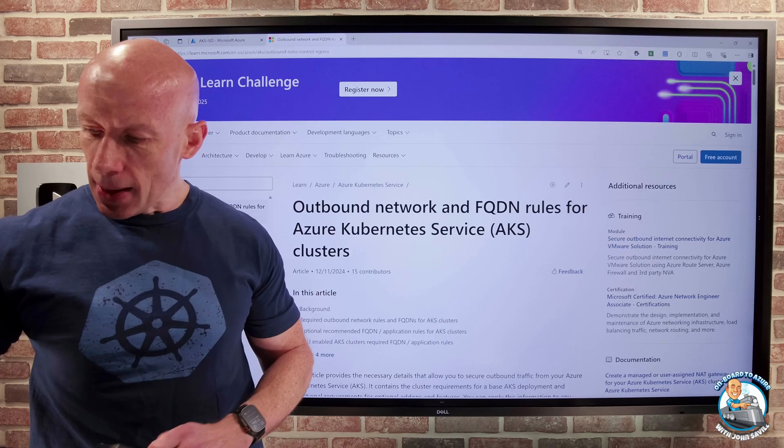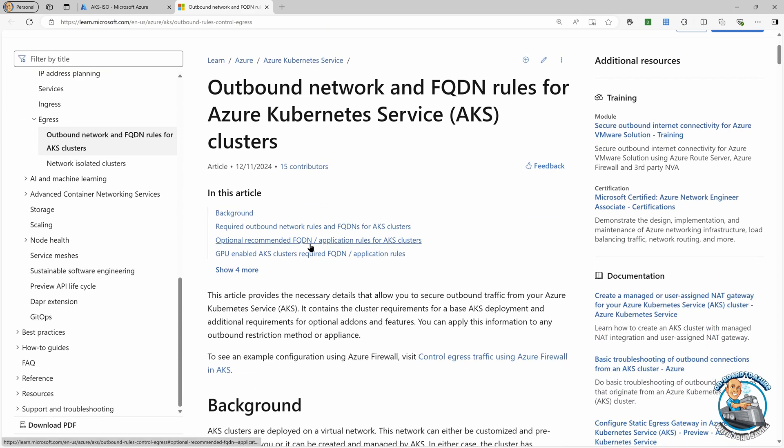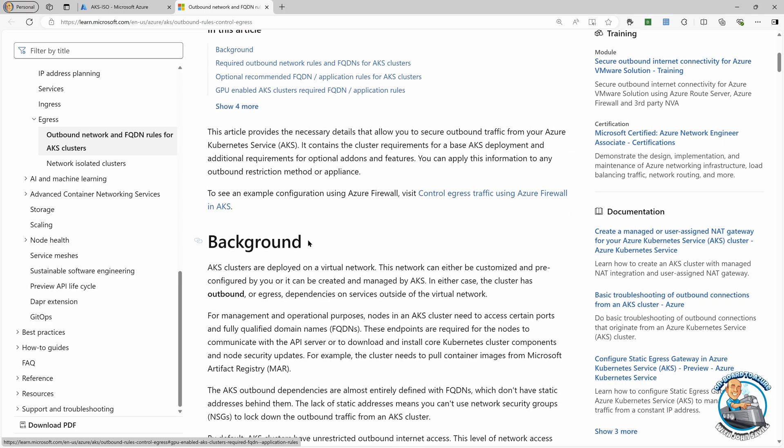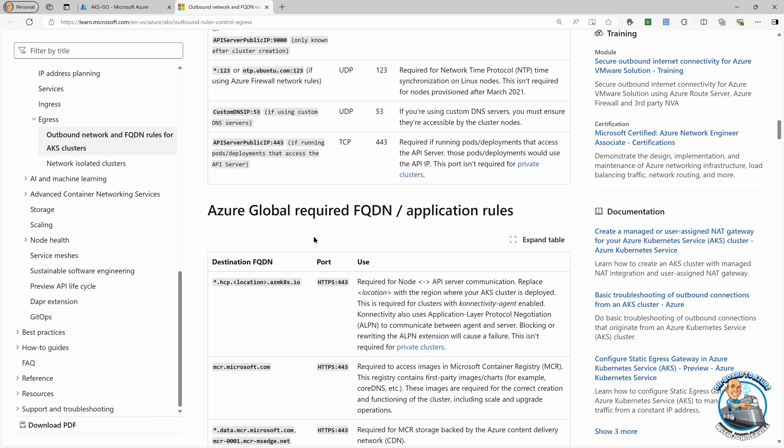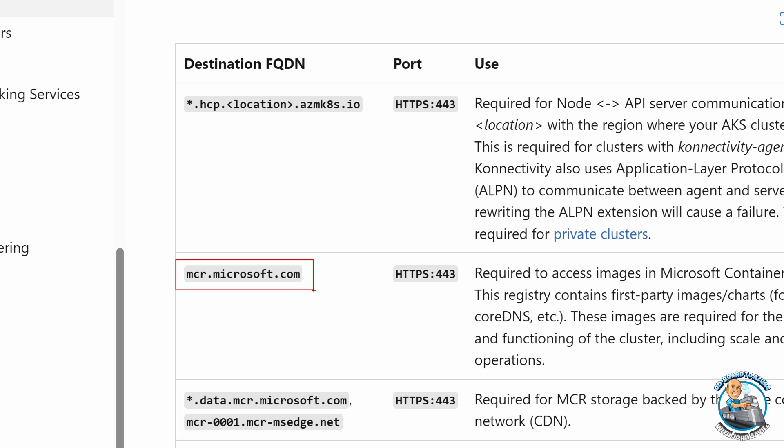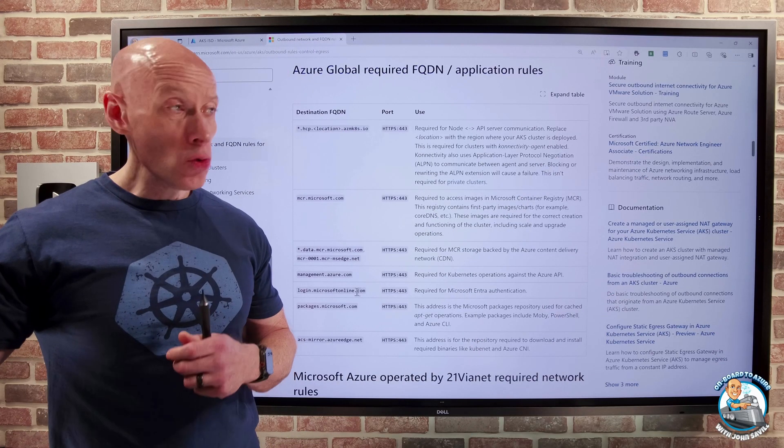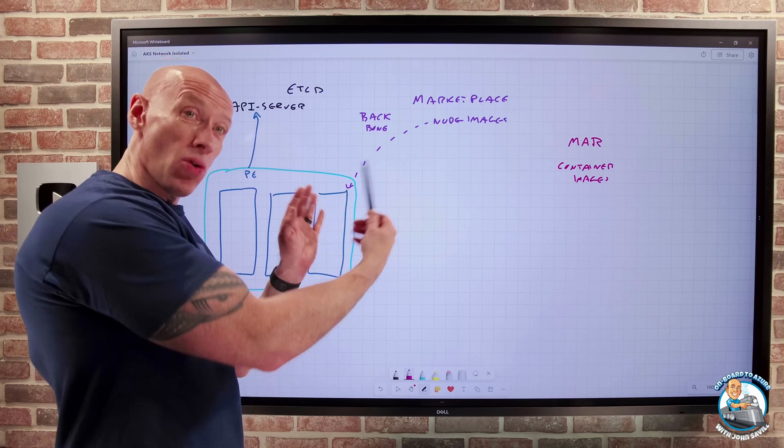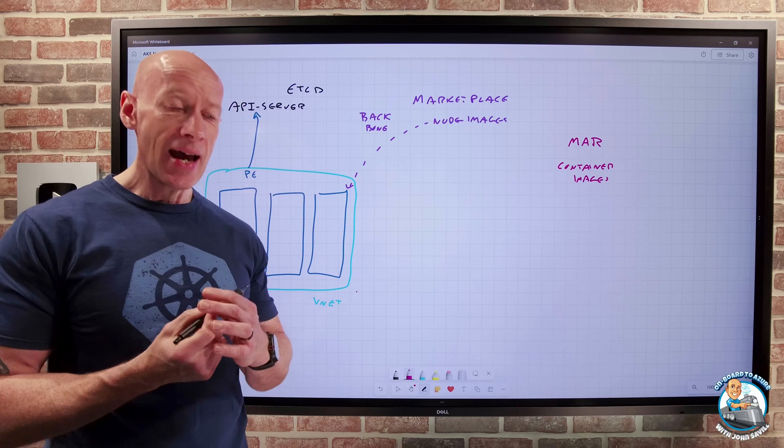Now, there were some ways to limit that. So one of the things we previously could do was we could use a user-defined route, guide the IP traffic through something like an Azure firewall. And then you could allow only certain fully qualified domain names. For example, one of the ones you had to have was the Microsoft Container Registry or Artifact Registry. I had to have that. And there were some other ones as well. There's packages.microsoft.com, etc. So one option I had was, sure, I could put in an Azure firewall or some other network appliance and restrict the fully qualified domain names. But there's a complexity to that and there's a cost to that.